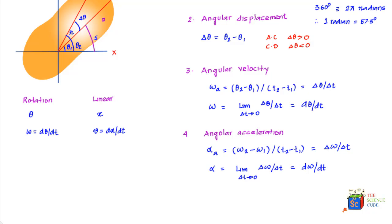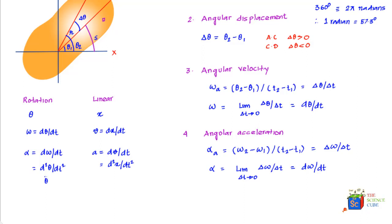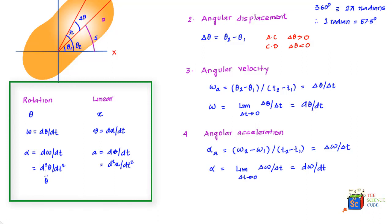The angular acceleration of every point on the rigid body is the same. Drawing a parallel with linear motion: if alpha = dω/dt in rotational motion, the equivalent in linear motion is a = dv/dt. We also know acceleration can be written as the second derivative of position, so in rotational motion alpha = d²θ/dt². This is sometimes written as theta-double-dot, and similarly x-double-dot is used in linear motion.